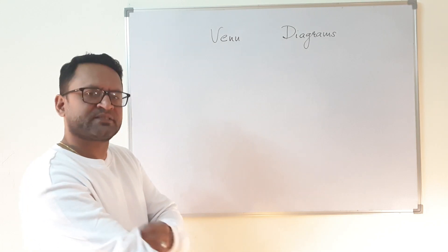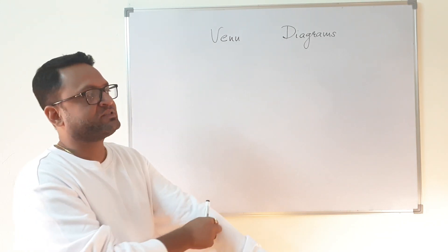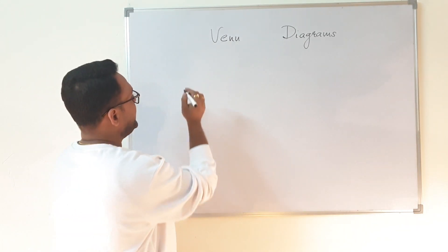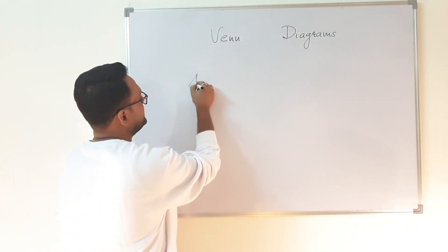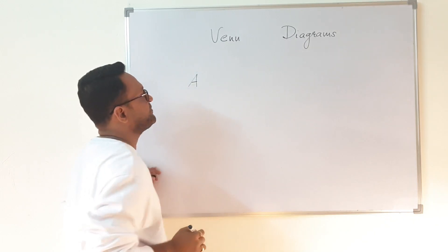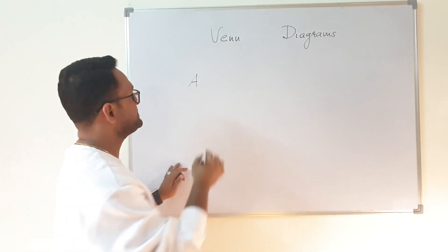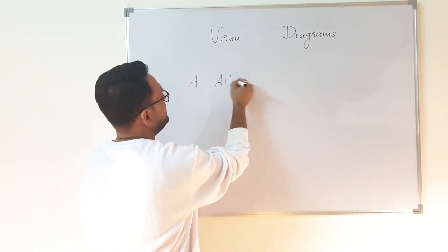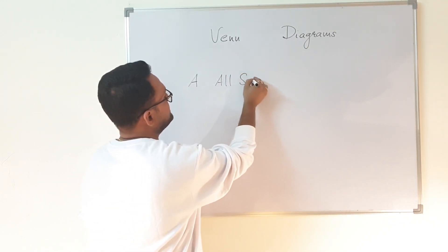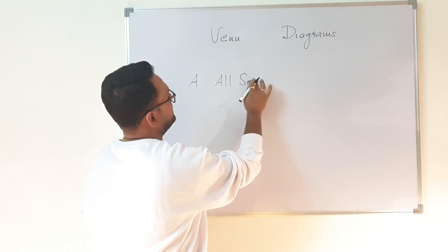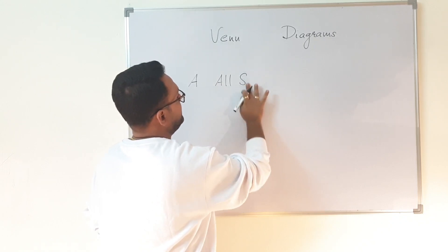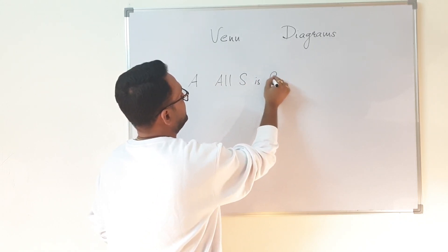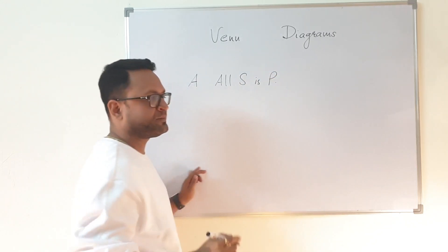Let us start with universal propositions. We know A is a universal proposition which is represented as 'all S is P,' so how is it drawn in Venn diagrams?